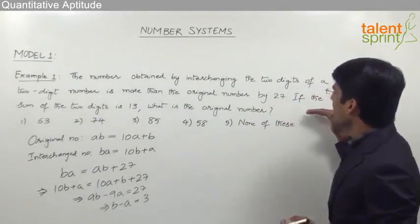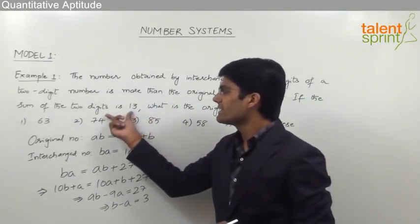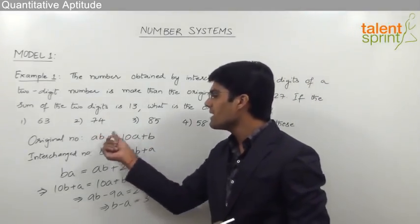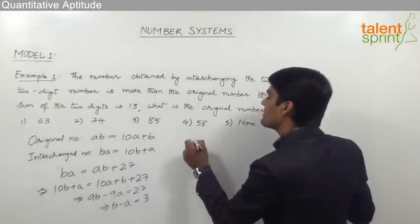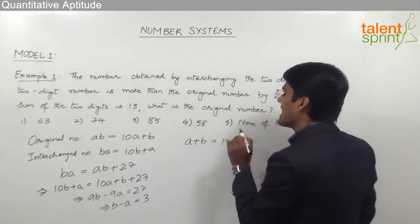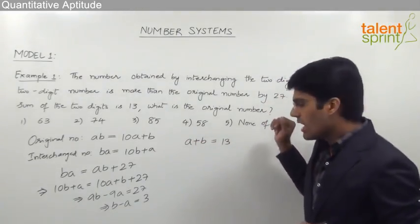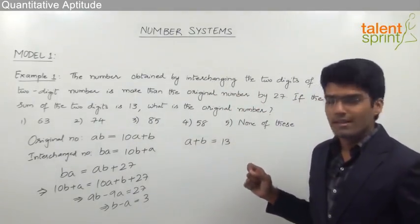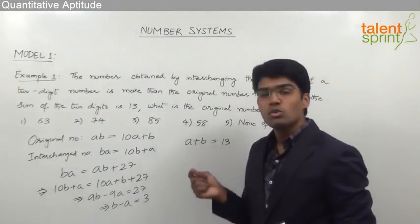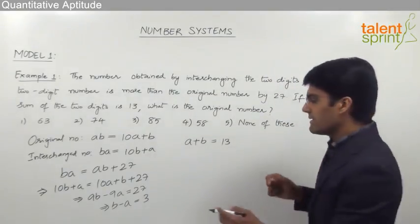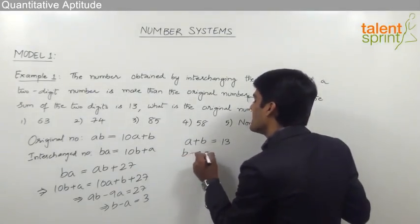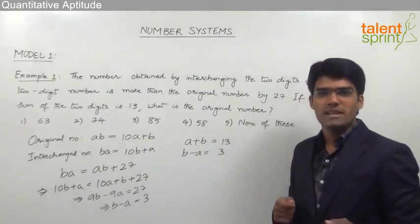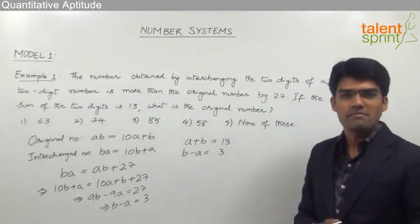The second condition states that the sum of the two digits is 13, so A plus B equals 13. We now have two equations with two variables: A plus B equals 13, and B minus A equals 3. By solving these two equations we can find the values of A and B.